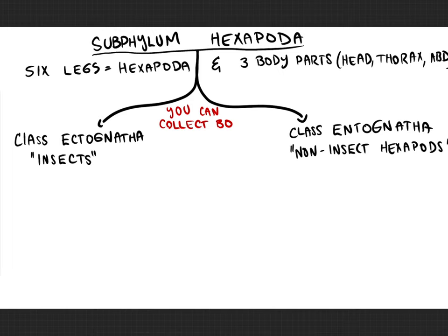For the sake of this class, you can collect both — things traditionally identified as insects and non-insect hexapods. But I don't want any spiders, scorpions, centipedes, or millipedes, because those are in different subphyla.